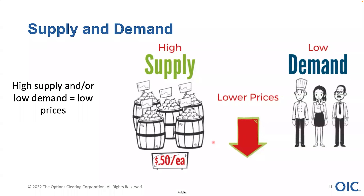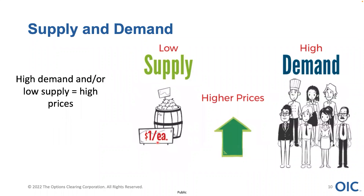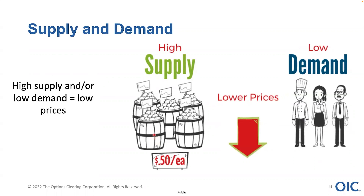If all of a sudden those apples that were trading for a dollar attract more sellers — more producers of apples — as more sellers come into the market, you're going to have greater supply and more apples on the market. That's naturally going to satisfy the demand, and there may even be a drop off in demand. Now apples are trading for 50 cents each. High supply, low demand is going to equate to lower prices — and it's no different for options.